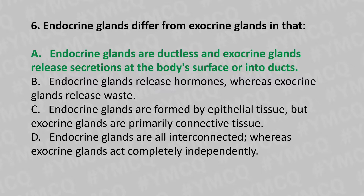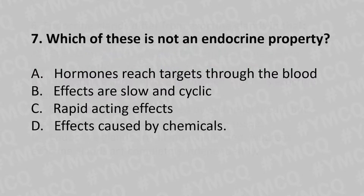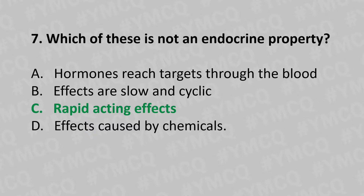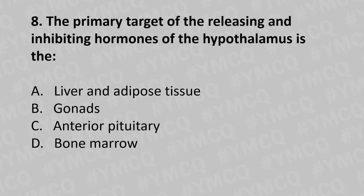Moving to our seventh question. Which of these is NOT an endocrine property? Option A: hormones reach target cells through the blood. Option B: effects are slow and cyclic. Option C: rapid acting effects. Option D: effect caused by chemicals. And the answer is Option C: rapid acting effects.